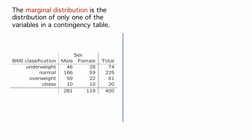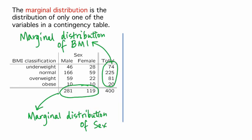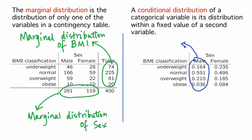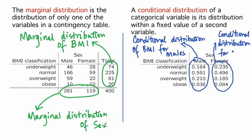The marginal distribution of a categorical variable can be thought of as the distribution of only one of the variables in a contingency table, seen in the margins by taking the row or column totals. To understand whether BMI classification is the same for both sexes, we need the distribution of BMI classification separately for each sex — this is known as a conditional distribution. Given that a skeleton is male, the conditional distribution is the distribution of BMI classification just for males, and similarly for females.